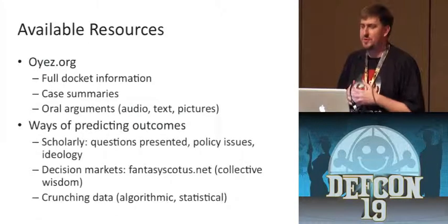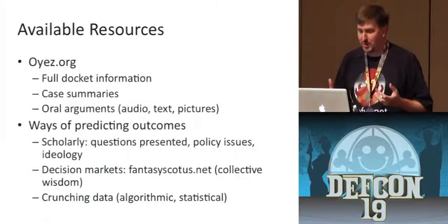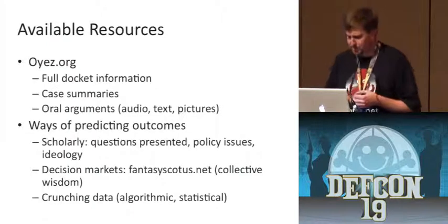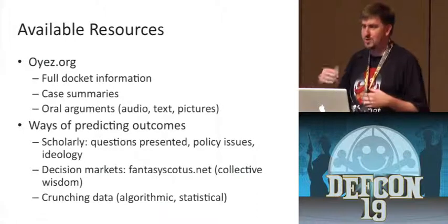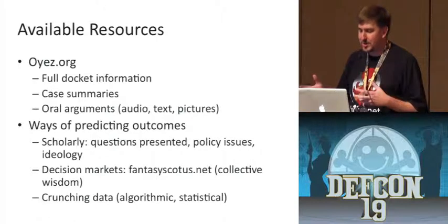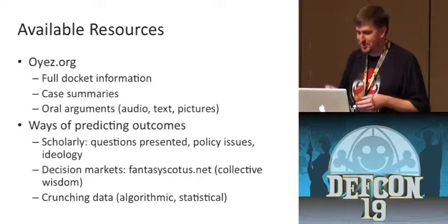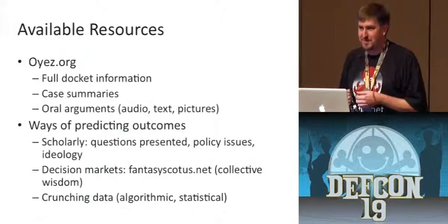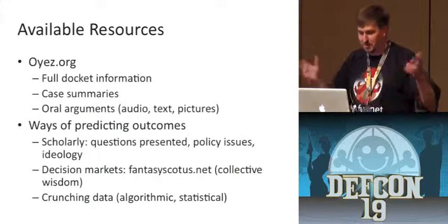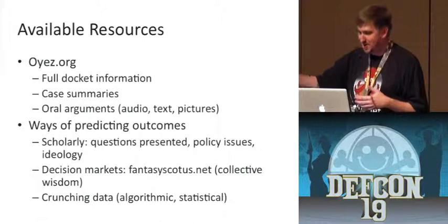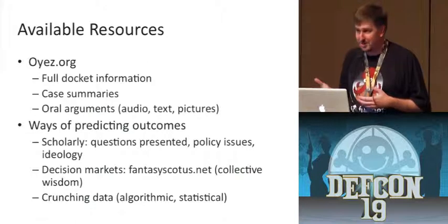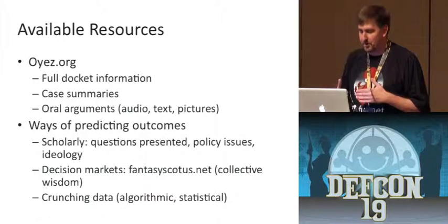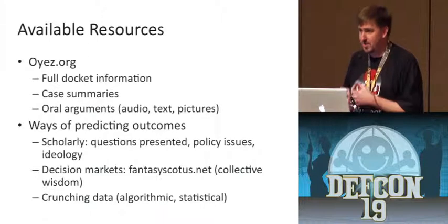We already have several ways of predicting case outcomes. One is the scholarly way: study the questions the court is being asked, research the policy issues, understand the ideologies of the justices, and make a prediction — this is what Dahlia Lithwick or whoever's on NPR is doing. There's also the Fantasy SCOTUS project, sort of like fantasy baseball, harnessing the collective wisdom of legal pundits — and it turns out Fantasy SCOTUS is not a bad predictor. Some people have also tried algorithmic approaches to make complex systems for predicting outcomes.